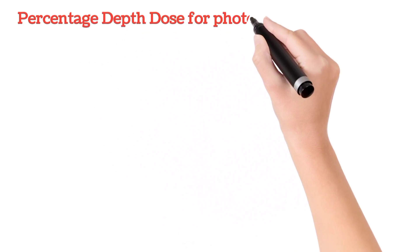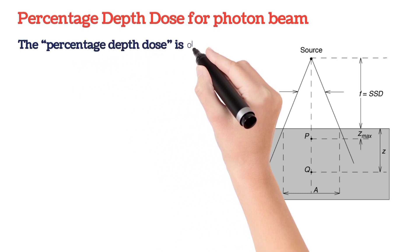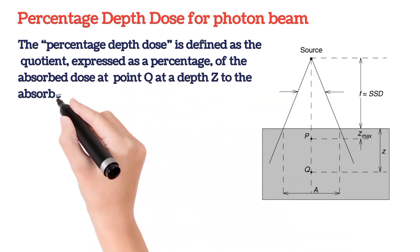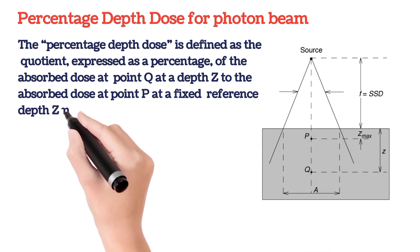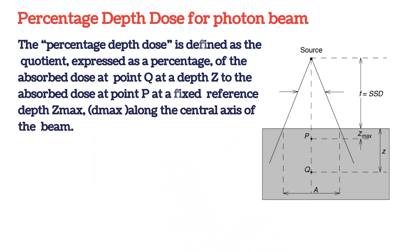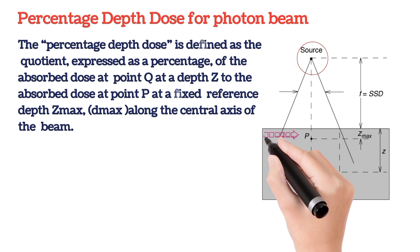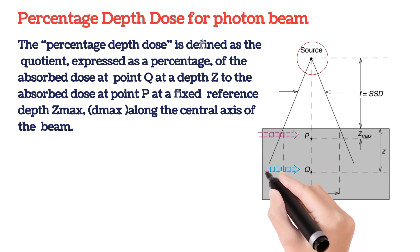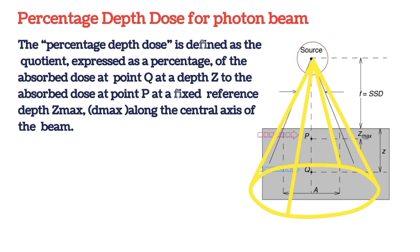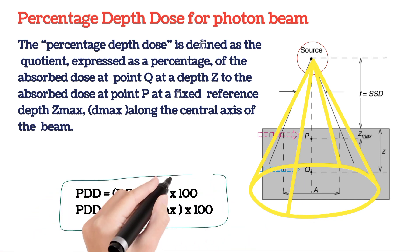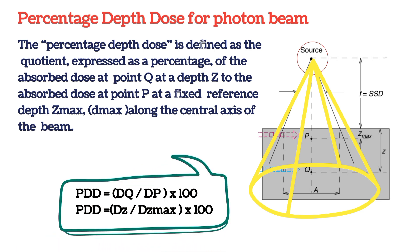PDD is expressed as a percentage of the absorbed dose at point Q at a depth Z to the absorbed dose at point P at a fixed reference depth D max along the central axis of the beam. PDD is simply the ratio of dose at two points at different depths, multiplied by 100.